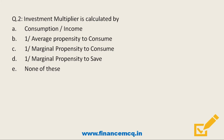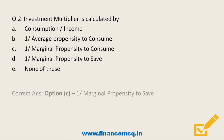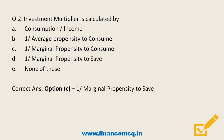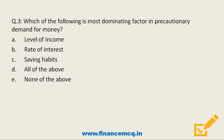Next question: Investment multiplier is calculated by — Option A: Consumption divided by income, Option B: One divided by average propensity to consume, Option C: One divided by marginal propensity to save, Option D: None of these. The correct answer is Option C — one divided by marginal propensity to save. When investment increases by a certain amount, aggregate income increases by a multiple of that investment, and that multiple is called the investment multiplier.